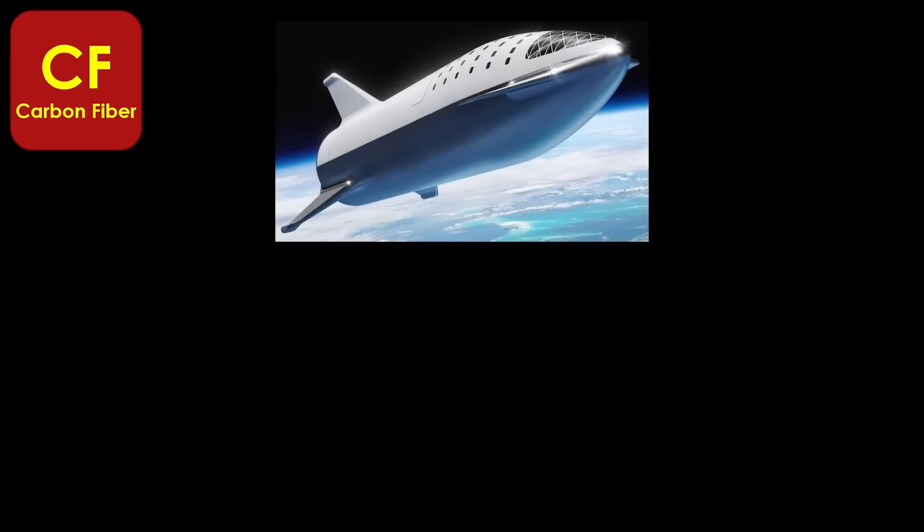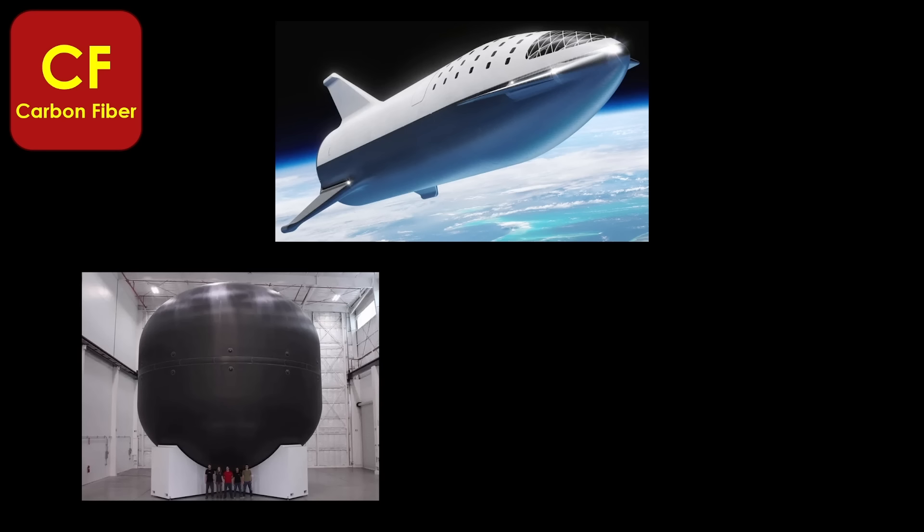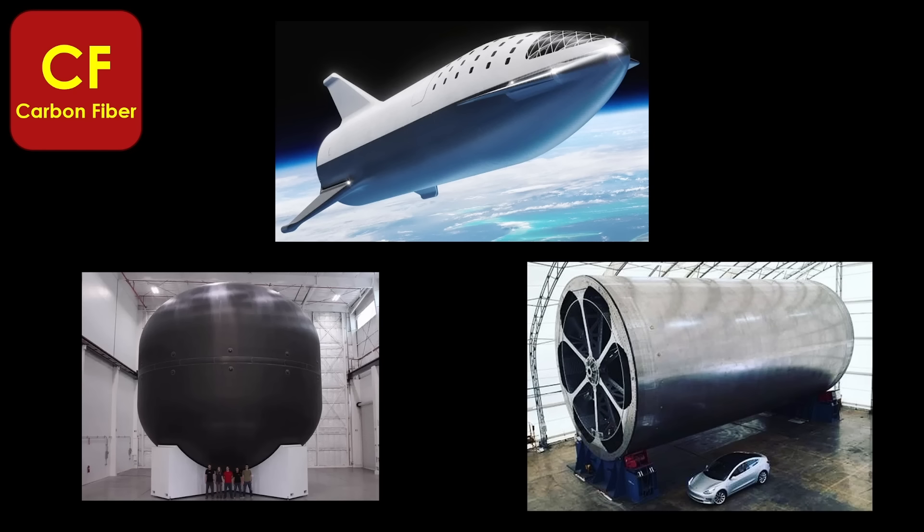Which brings us to carbon fiber. Before the name Starship existed, SpaceX called their project BFR, and it was going to be full carbon fiber. SpaceX had two tank domes made and put together into this short tank, and they had this full-size mandrel built that would be used to wind carbon fiber onto to build the straight sections of the tanks. So somewhere, there's a design for how to build a Starship-class vehicle out of carbon fiber.